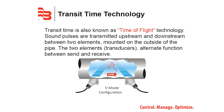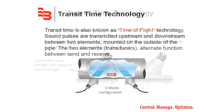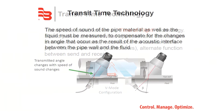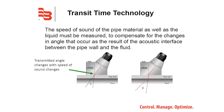The speed of sound of the pipe material as well as the liquid must be measured to compensate for the changes in angle that occur as a result of the acoustic interface between the pipe wall and the fluid.